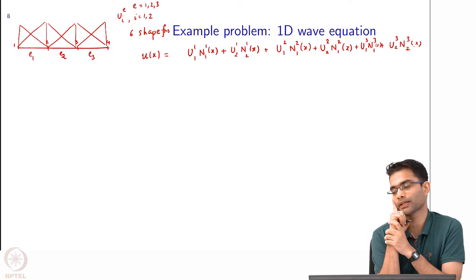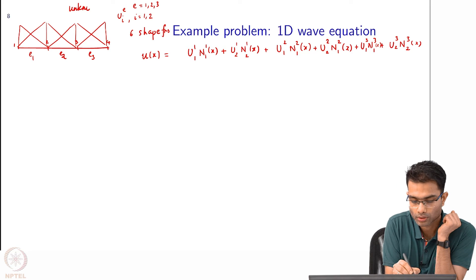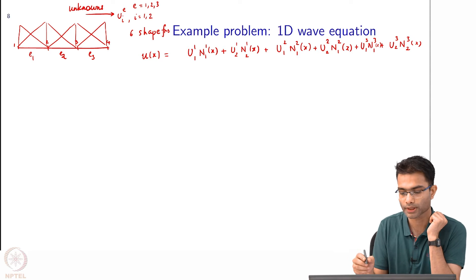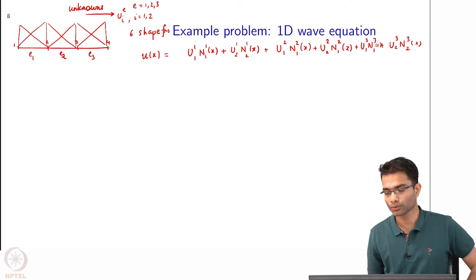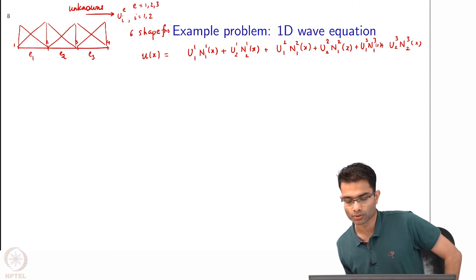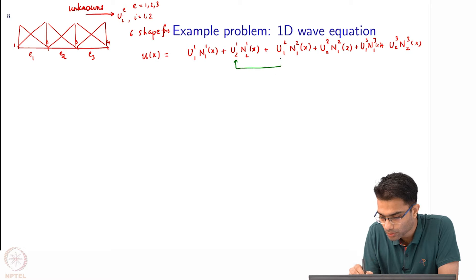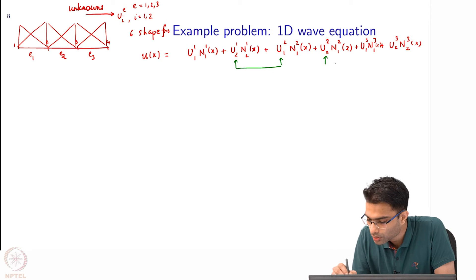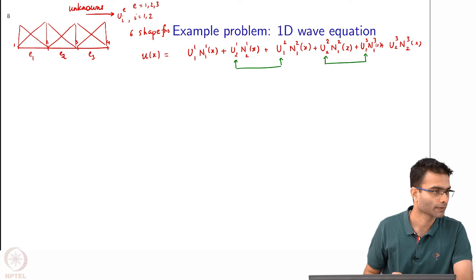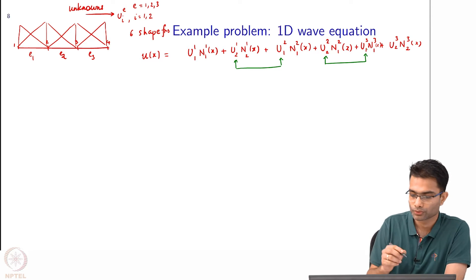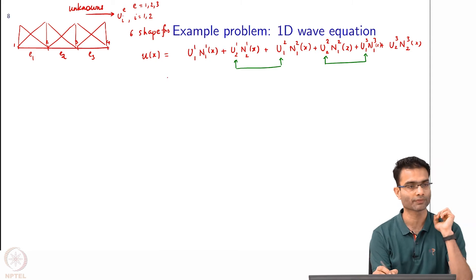Now, of these variables some variables are the same. Of these unknowns, some are shared: u_21 equals u_12, and u_22 equals u_31. The common variables are equal to u_2 and u_3 respectively. So what you could do is rewrite this moving from local to global notation.